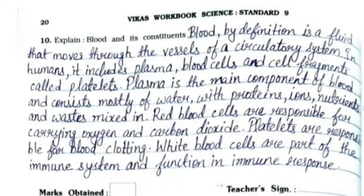Question 10: Explain blood and its constituents. Blood is a fluid that moves through the vessels of the circulatory system. It includes plasma, blood cells, and cell fragments called platelets. Plasma is the main component, consisting mostly of water with proteins, ions, nutrients, and wastes. Red blood cells carry oxygen and carbon dioxide. Platelets are responsible for blood clotting, while white blood cells are part of the immune system and function in immune response.